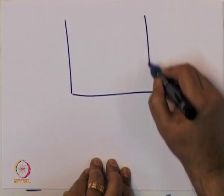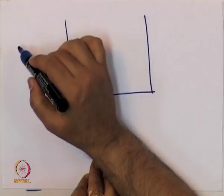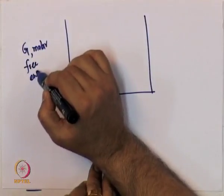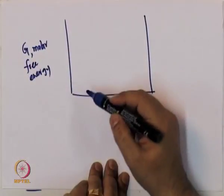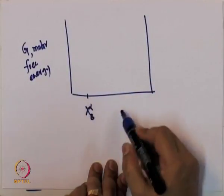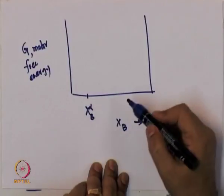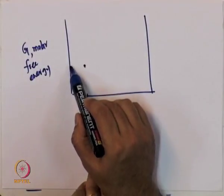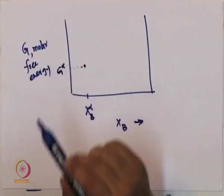We are going to use similar triangles to derive this property. Let us consider molar free energy G. I have two points — one point corresponds to the composition x_B alpha, and the corresponding point is the molar free energy for the alpha phase.